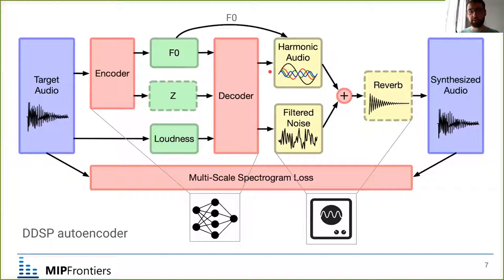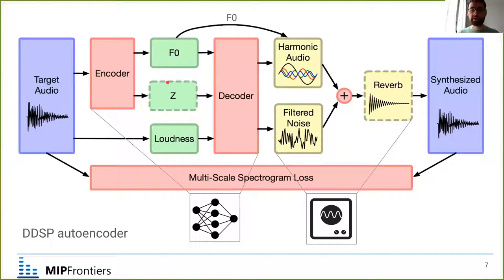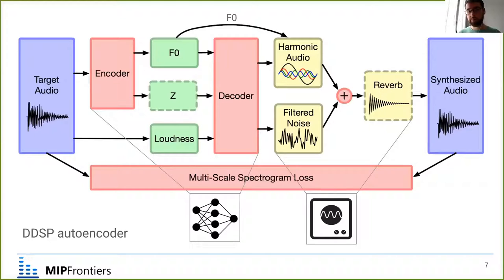The network consists of an encoder and a decoder. Interestingly, the decoder inputs are meaningful features: pitch, loudness, and some residual features called Z, which are mostly related to timbre. This gives some control over generation. The authors have a very nice demo where they train the model on one instrument like violin, then input human singing, and the model performs timbre transfer, making singing sound like violin with very good sound quality.